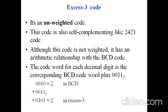The third category is the XS3 code, also known as Excess-3 code, which is an unweighted code. XS3 was popularly used in earlier computers; newer computers primarily use 8421 BCD code. XS3 is also a self-complementing code, just like 2421.